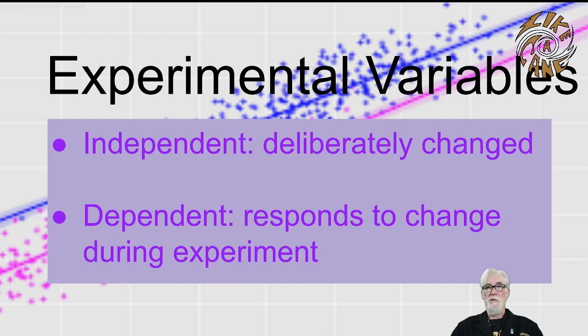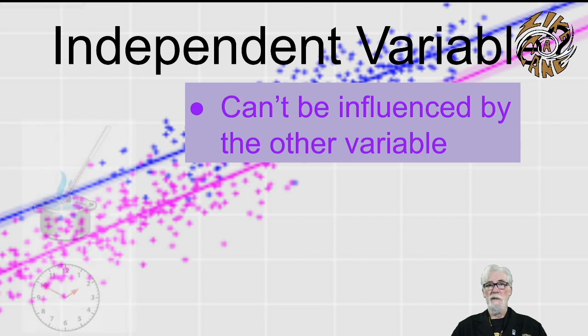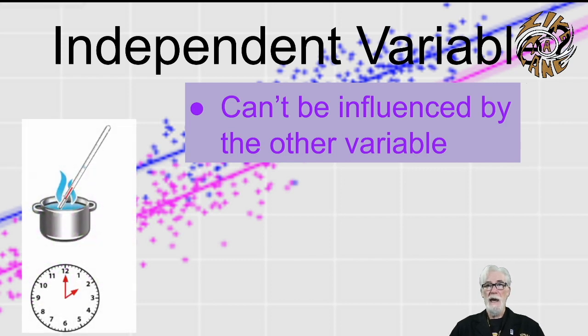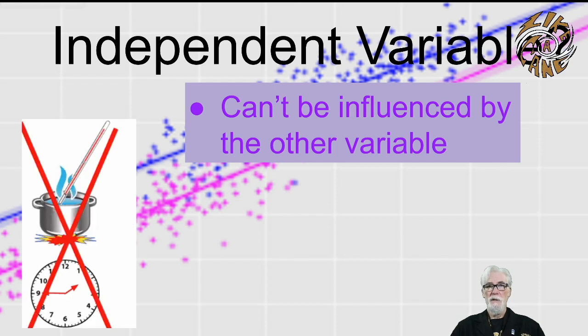A great example of such an independent variable is time. The dependent variable responds to change during the experiment, if it's related to the independent variable. For example, if we see a pot of water cooling as time increases, time would have to be the independent variable, because we can't warm the pot up and make time go backwards.